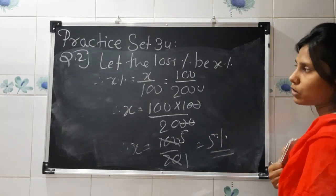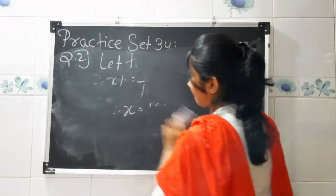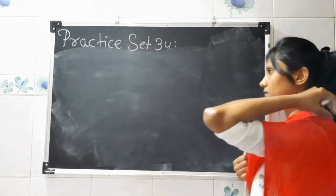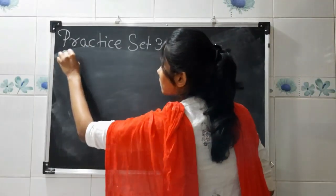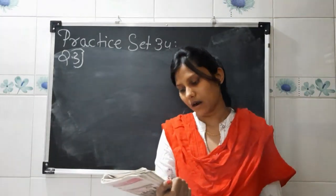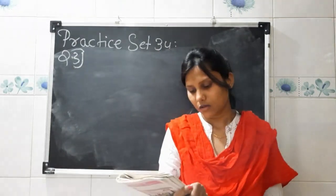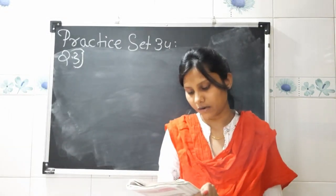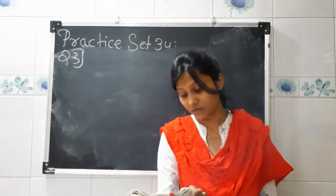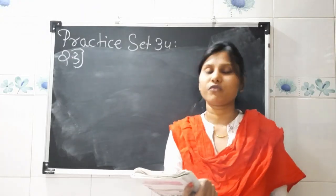You have to frame a question for this problem on your own. Now the third one: the cost price of eight articles is rupees 1200 each and the selling price is rupees 1400 each. This question is a little different, so I will show you how to frame it.